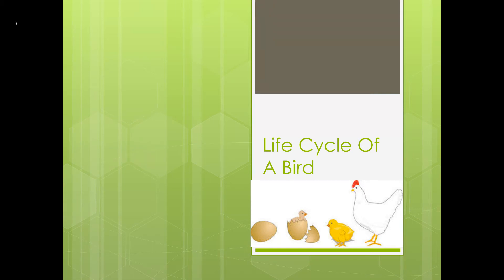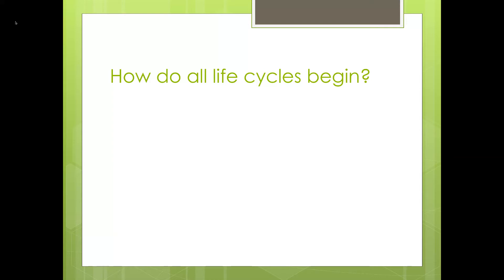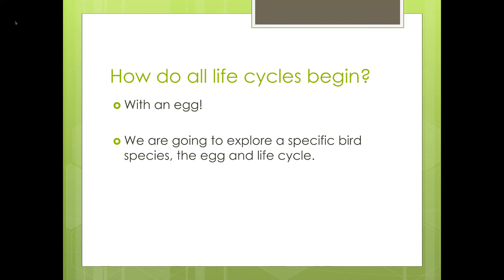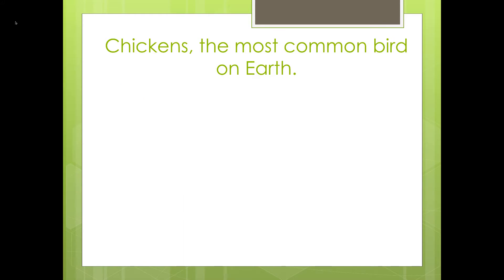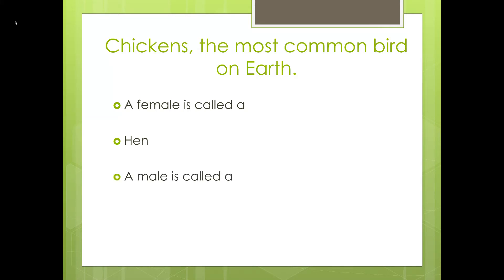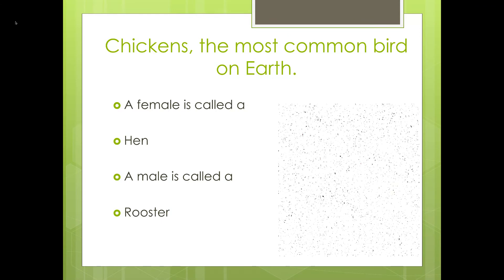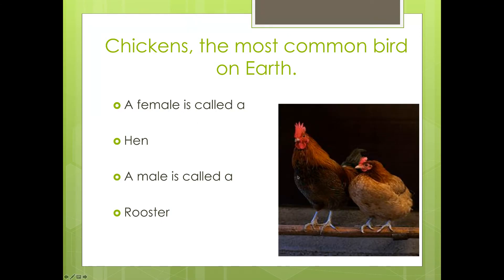The life cycle we are learning about today is the life cycle of a bird. How do all life cycles begin? With an egg! We are going to explore a specific bird species — the chicken. It's the most common bird on earth. A female chicken is called a hen, and a male is called a rooster. Here is a picture of a rooster and a hen.